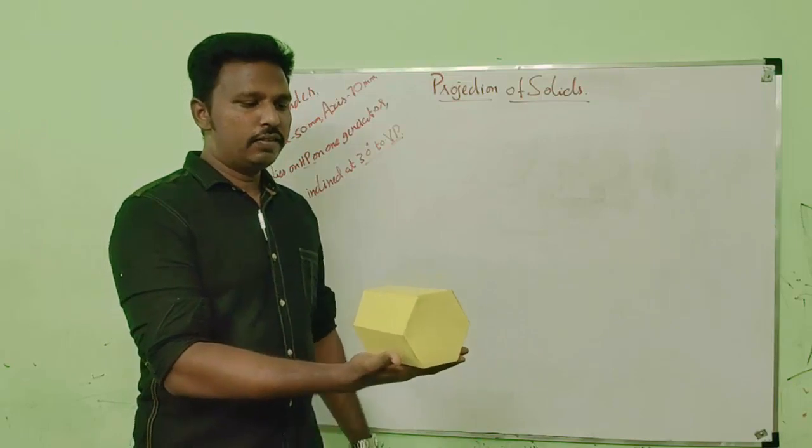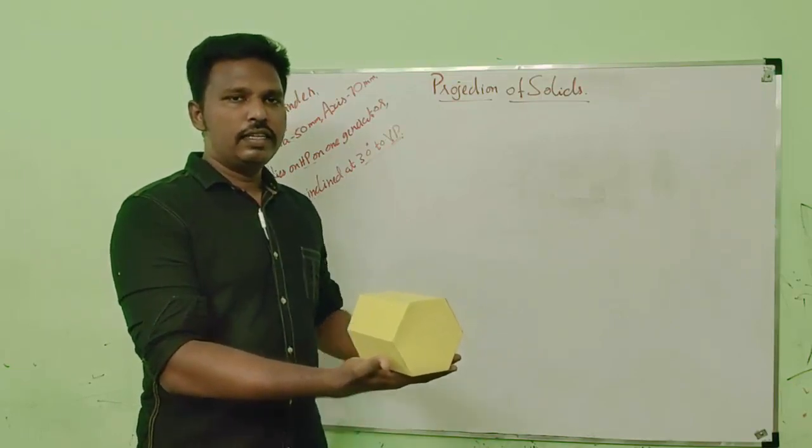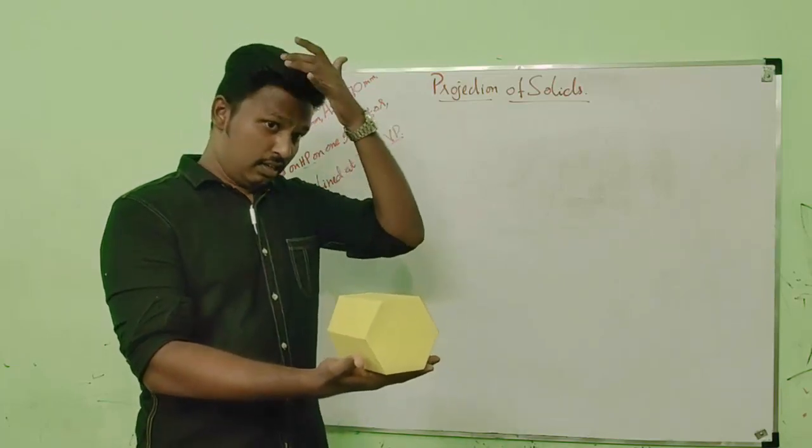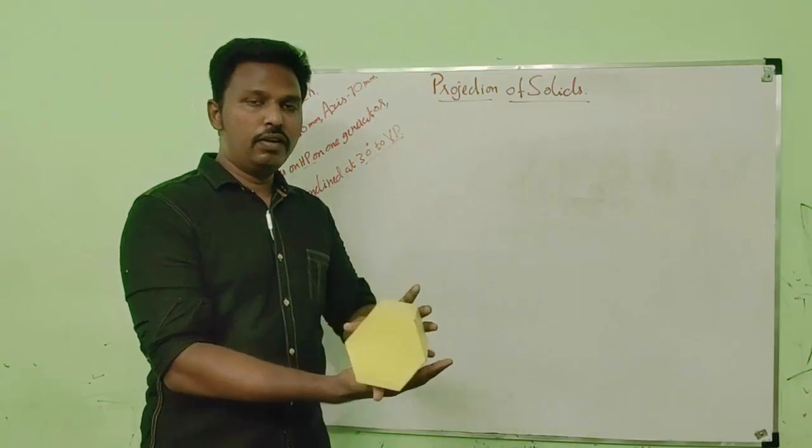So this is the orientation. In this orientation, we have to assume the axis inclination as perpendicular in the first case. So we have to assume that the axis is perpendicular to VP.